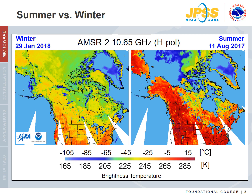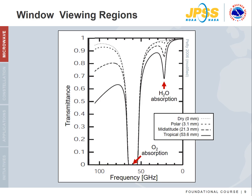Another thing to notice is the lack of clouds in the images — we are looking at 10 GHz imagery, a frequency that falls directly within a window region. Within the frequency range from 1 to 100 GHz, there is an oxygen absorption region centered at 60 GHz and a water vapor absorption region centered at 22 GHz. For the best view of surface features, we want to avoid these.